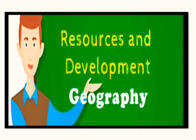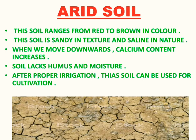Let's start with arid soil. This soil ranges from red to brown in color, so the color range of arid soil is red to brown. This soil is sandy in texture and saline in nature. When we move downwards, the calcium content increases.